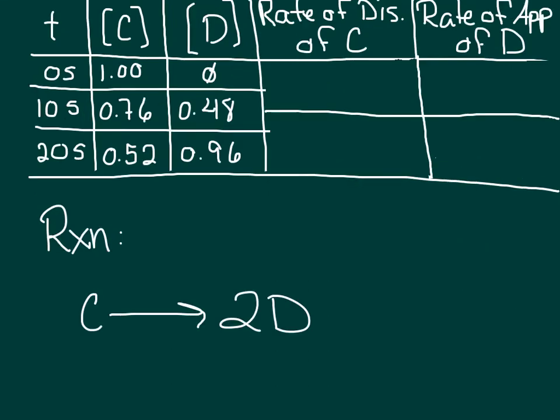Let's look at sample data for a different reaction. Here we have the reaction of C forming 2D. If we look at the data that we're given, we see at 0, 10, and 20 seconds we have concentrations recorded for both C and D. We can calculate the rate of disappearance of C as well as the rate of appearance of D just like we did on the previous slide. You should pause the video here and give that a try on your own.